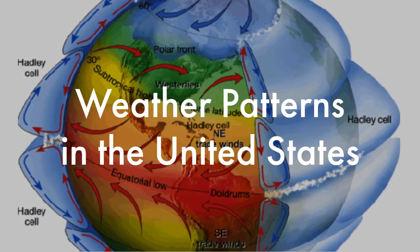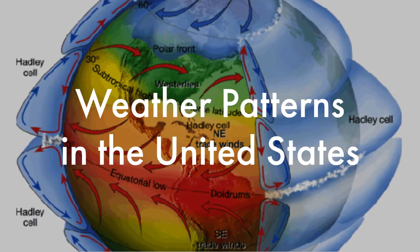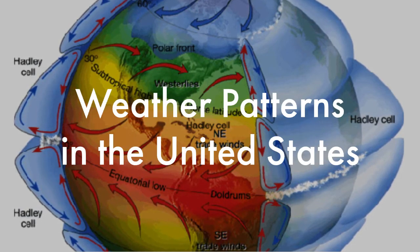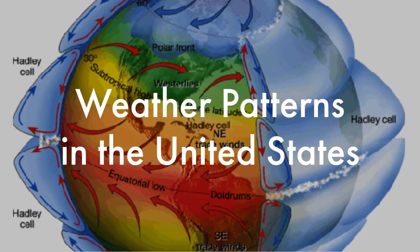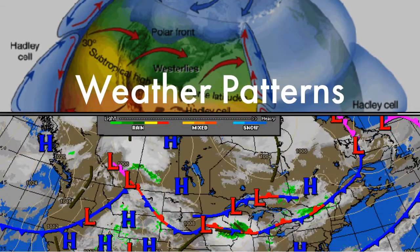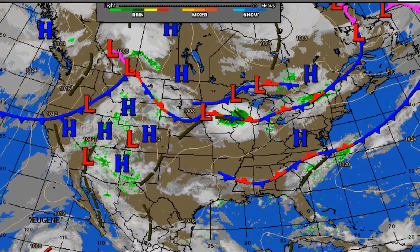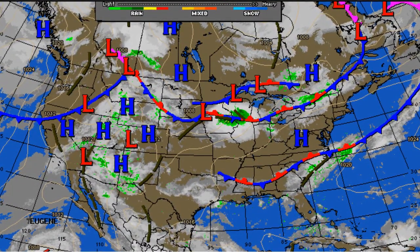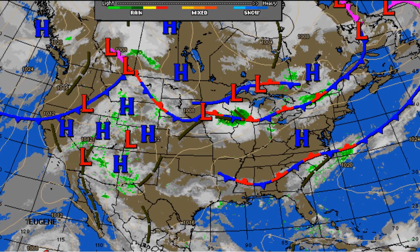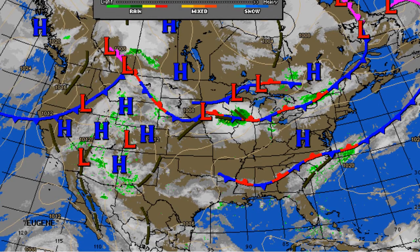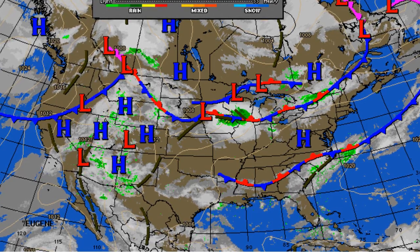Hi everyone, my name is Ryan Harris with Purdue Extension in Spencer County, and in this video we will talk about some common weather patterns in the United States. Let's get started by talking about what a weather system is. Weather systems include both low and high pressure air that travel across the planet. Under the right conditions, weather systems can create patterns like rain and snow.